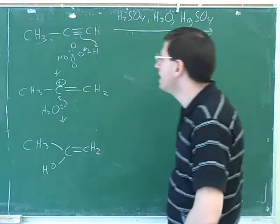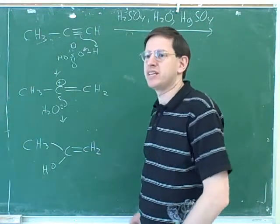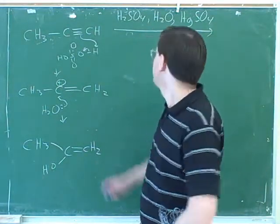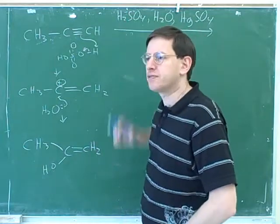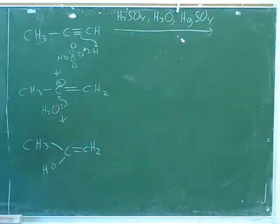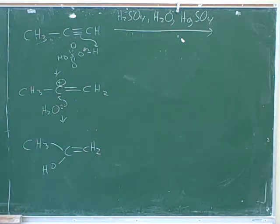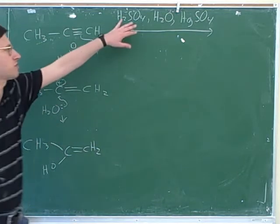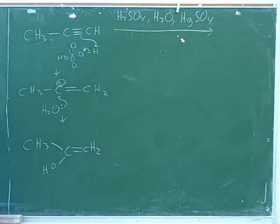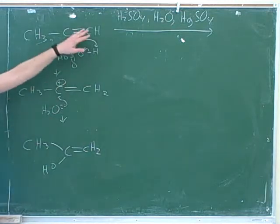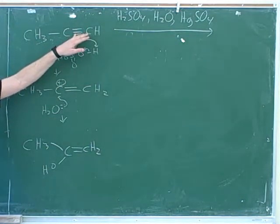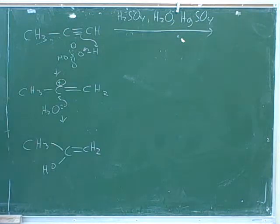Let's talk through what we did so far. The first step should have been easy because there's a strong acid. If there's a strong acid, you must start by having the strong acid give its proton to somebody. If you have a strong acid, you must start by having the strong acid protonate somebody. The only good candidate to be protonated here is the pi bond — we know that pi bonds are good electron donors. So we're going to start by protonating this pi bond. If you have a strong acid, you start by having the acid protonate somebody.